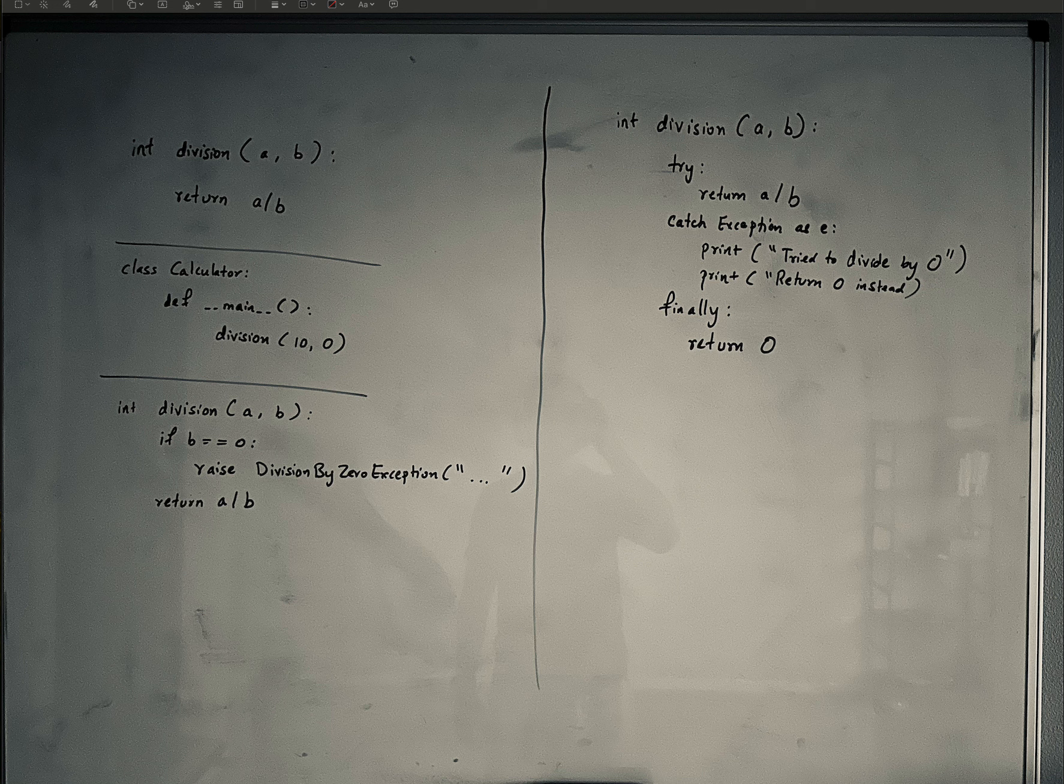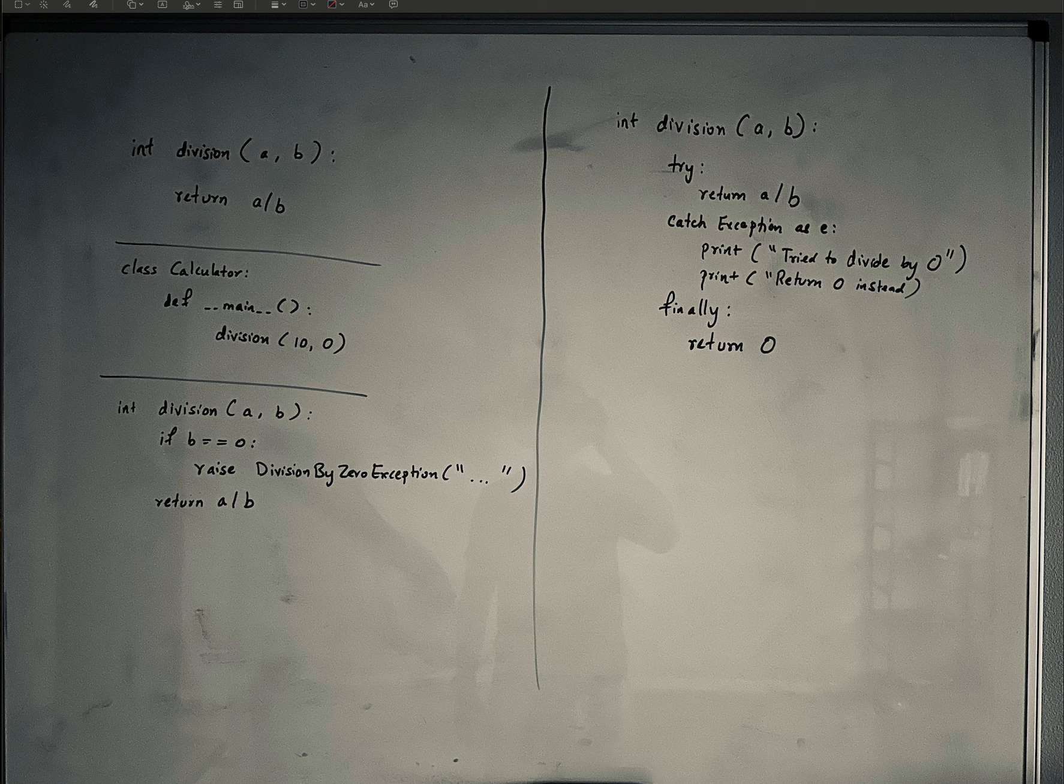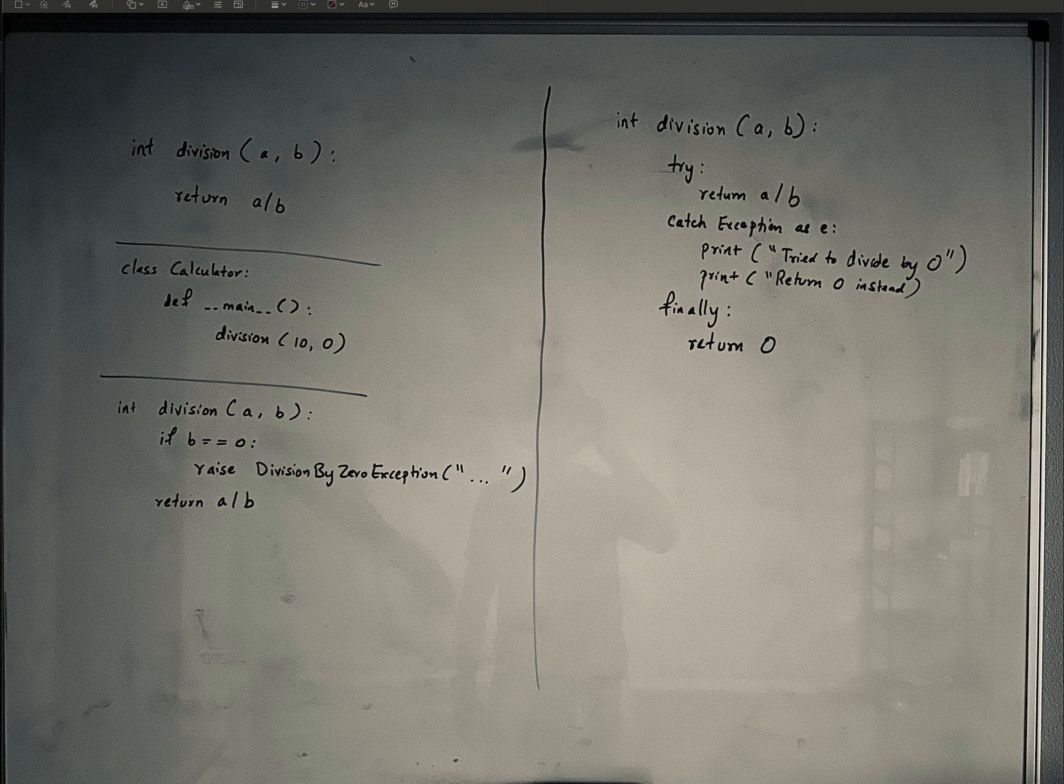So what is an exception? An exception is just something that represents an error. When your code is trying to do something but is unable to do it because of certain conditions, then it raises an error.